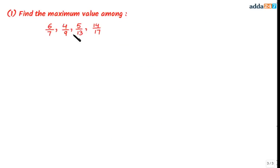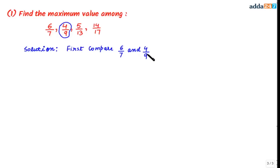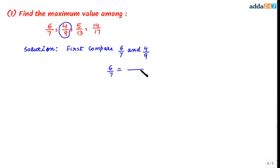Now let's take an example where we are given some fractions and have to find the maximum value. The correct answer is 4/9 — wait, let's see how we arrive at this. Let's first compare 6/7 and 4/9. We will make the denominator the same; the LCM of 7 and 9 is 63. To make the denominator 63, we multiply 7 by 9.